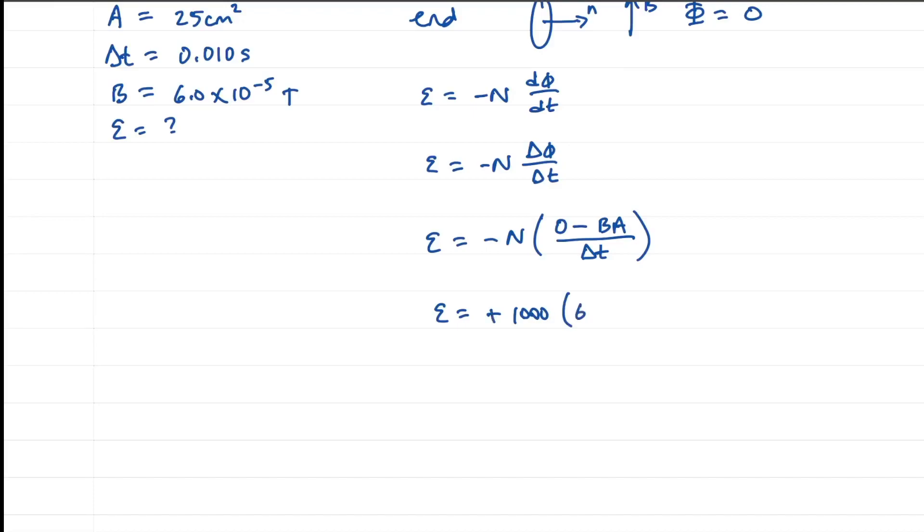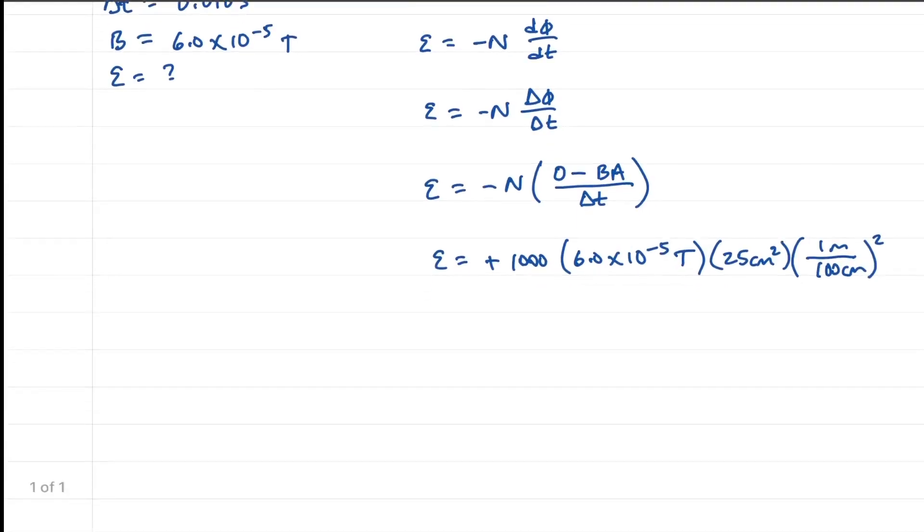The B is 6.0 times 10 to the minus 5 Teslas. Area is 25 centimeters squared. In one meter, there are 100 centimeters. We have to square this factor. Otherwise, we won't clear all the units. And we are dividing by delta T, 0.010 seconds.